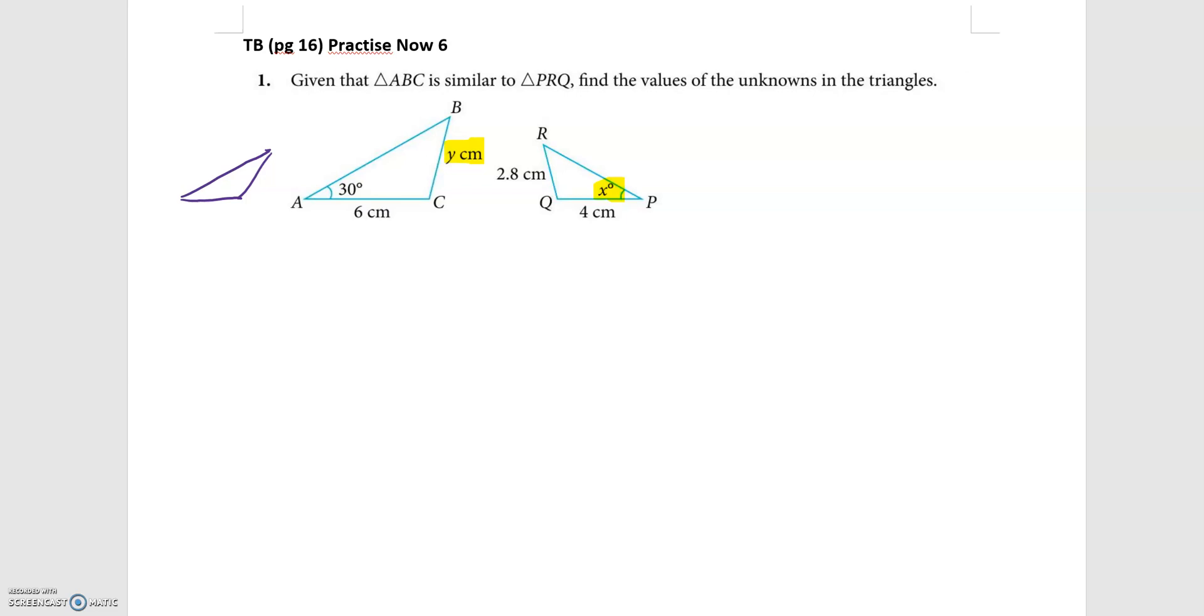So going by the name, A corresponds to P, so this vertex is P. B corresponds to R, so this is R. And C corresponds to Q, so this is Q. So let's check triangle ABC similar to PRQ. Let's fill in some of the information that they have given us.